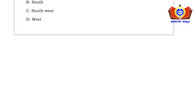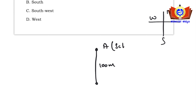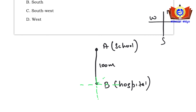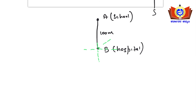Mark north, east, west, south. Let the school be point A. Saurabh walks 100 meters south to point B — the hospital. From B, he walks 30 meters northeast to point C. The northeast direction is drawn diagonally upward-right.